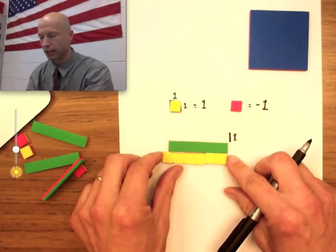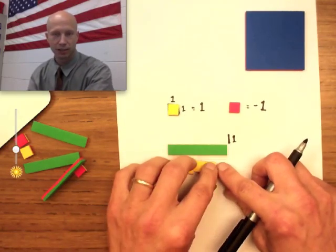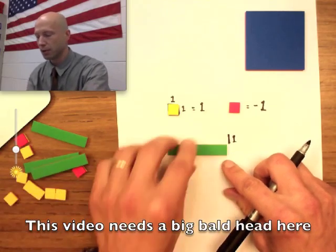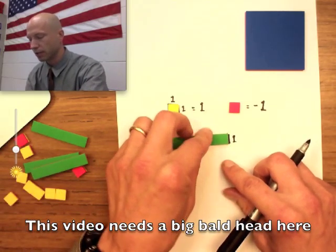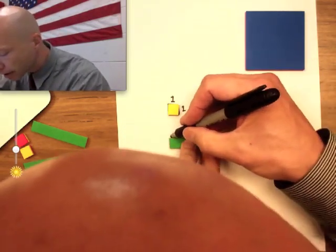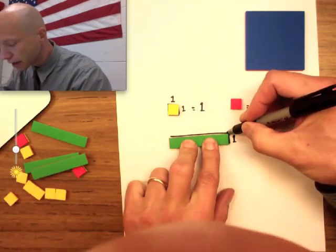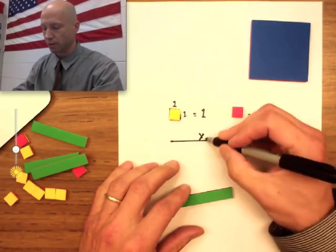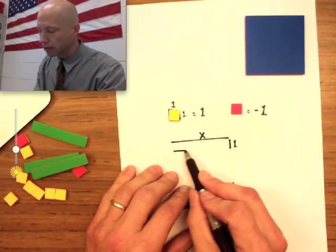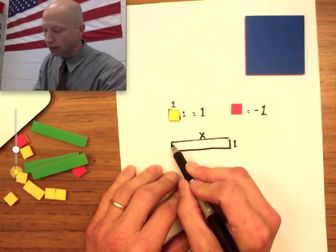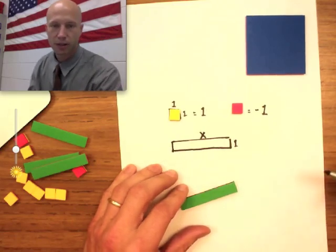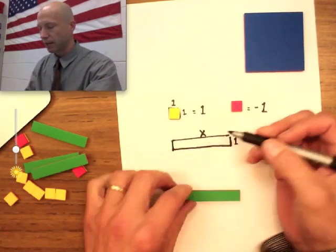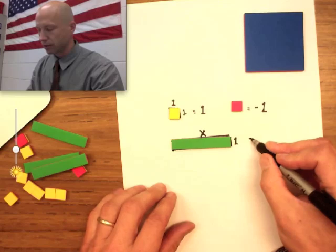And so we can imagine this green rectangle as sort of a magic box that contains an unknown number. Could be a million, could be zero, could be three. We don't know. But we're going to call this length X, which is usually what we use in mathematics to represent an unknown number. So we have a rectangle here with an area of X times one, length times width, and that is X. So from now on, this green rectangle is X.